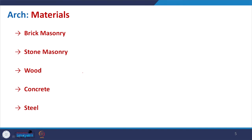Coming to the materials that can be used — any material can be used. Normally, materials used historically and in recent times include brick masonry, stone masonry, and sometimes wood, though it is not easy to curve wood and requires seasoning or making into battens. Concrete arches are also possible with proper reinforcement, and steel arches can be prefabricated and easily made as per requirement.